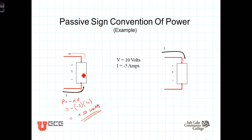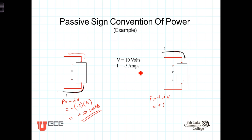Now we have another device. Here, the voltage is referenced plus to minus, but this time the current is referenced into the positive terminal. This combination — current going into the positive and out the negative — is the reference for a load, so P equals positive I times V. With I equal to negative 5 amps and V equal to 10 volts, the power associated with this device is negative 50 watts. The fact that it's negative tells us this device is acting as a source.